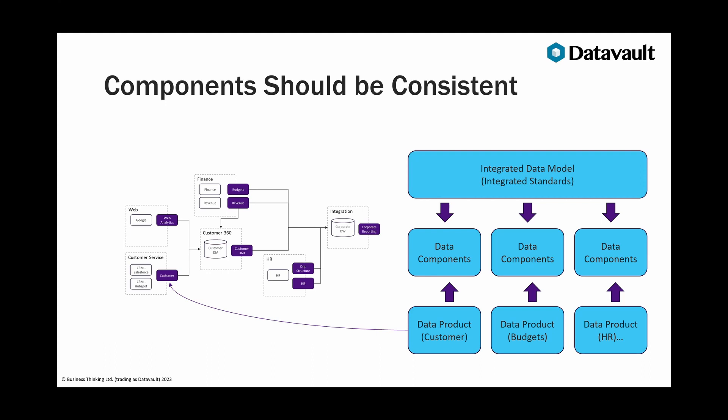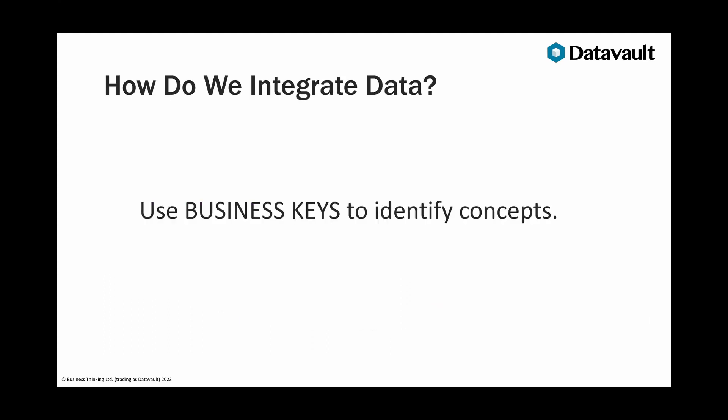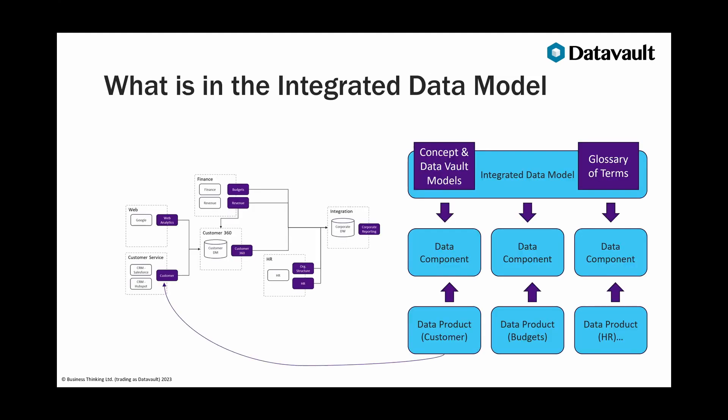To get those components specified, we need an integrated data model that says what a person looks like, what a product looks like, what a financial budget looks like. From there we can cut the component standards and assemble the flow specifications. By having an integrated data model, we can be certain those components will integrate no matter where they come from. Integration is all about business keys — very much a data vault message. In practice, this means getting the glossary of terms in place, doing conceptual and data vault spine modeling — identifying hub and link structures — and using them to assemble the component specifications.